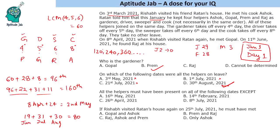The next question asks: on all of the following dates the helpers were present except which one? We need to find the day number for each option. For 16th May: the 120th day was 2nd May, adding 14 gives the 134th day — 134 is not divisible by 4, 5, 6, or 8, so all are present. For 14th February: 29 days in January plus 14 gives the 43rd day — not divisible, all present. For 26th April: 8th April was the 96th day, adding 18 gives the 114th day.